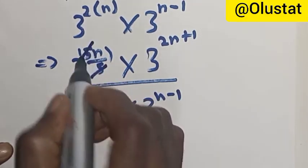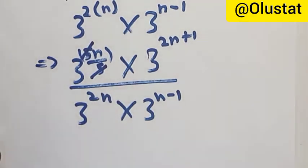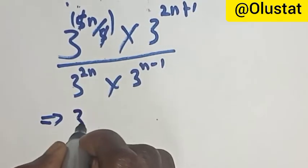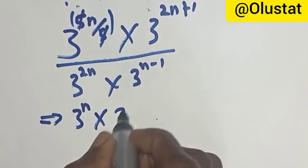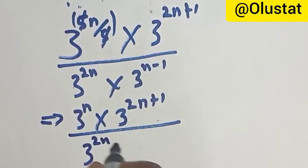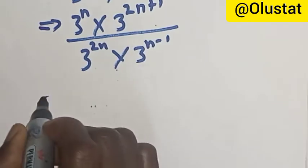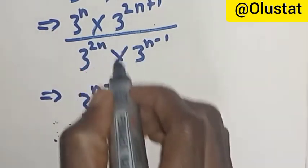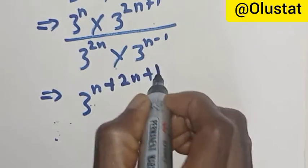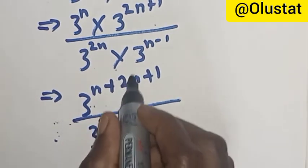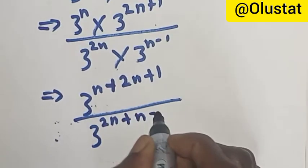From here, this 5 can cancel this 5. Since this 5 cancels this 5, we are left with: 3 raised to power n, multiplied by 3 raised to power 2n plus 1, over 3 raised to power 2n, multiplied by 3 raised to power n minus 1. When you multiply terms with the same base, you add up the powers.